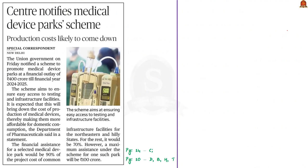This article is about a new scheme recently notified by the union government titled the Scheme for the Promotion of Medical Device Park. For this scheme a financial outlay of rupees 400 crore has been allotted, and this amount has been allotted till the financial year 2024-25.